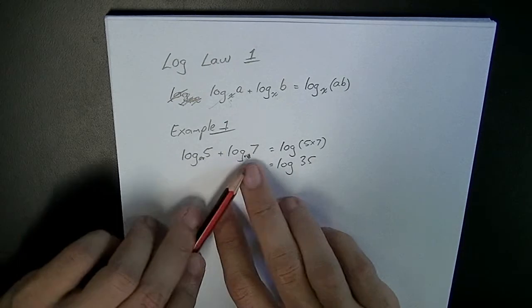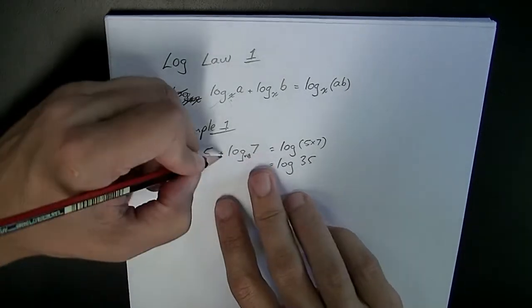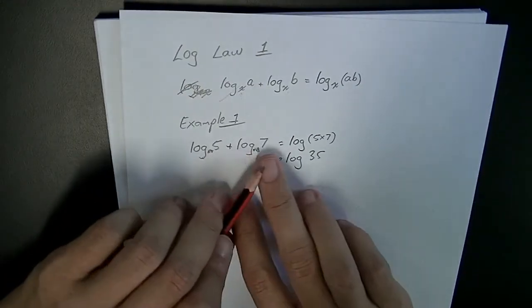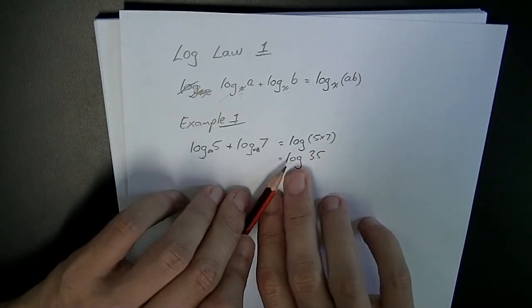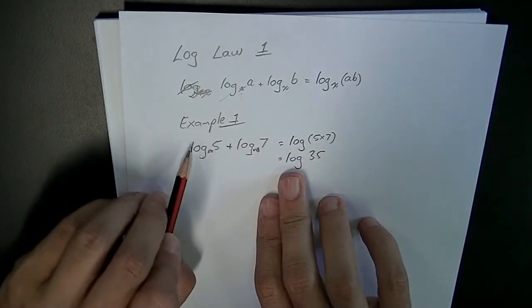If you've got things with the same base and they're added together, we can do 5 times 7 and combine them into a single log. What we've basically done is simplify that.